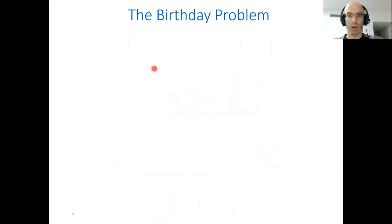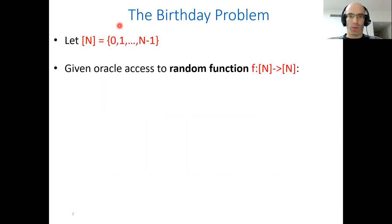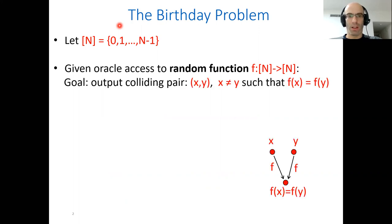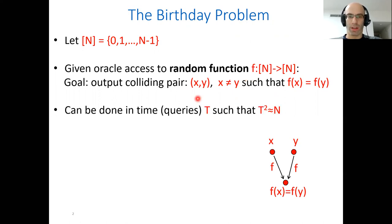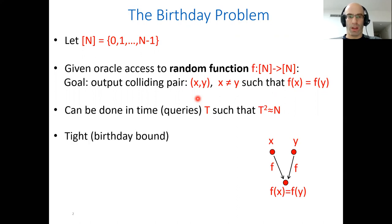I'll start by considering a very basic birthday problem. Assume we are given oracle access to a random function with domain and range of size n, and we want to output some colliding pair, meaning x and y that are different such that f(x) equals f(y). This can be done using t queries to the function with time complexity t such that t squared equals n, and this is known to be tight — it is basically the birthday bound.